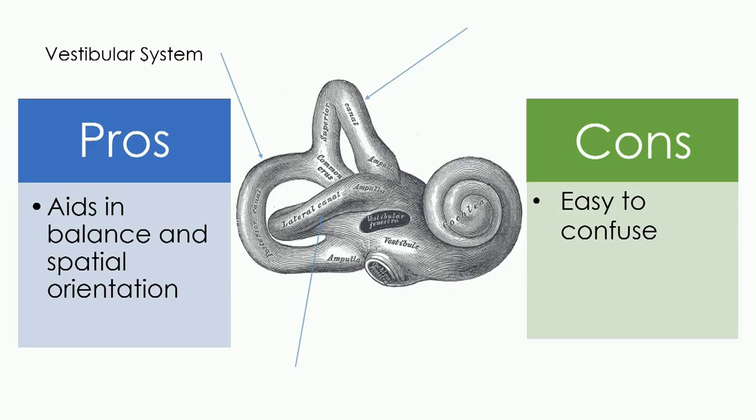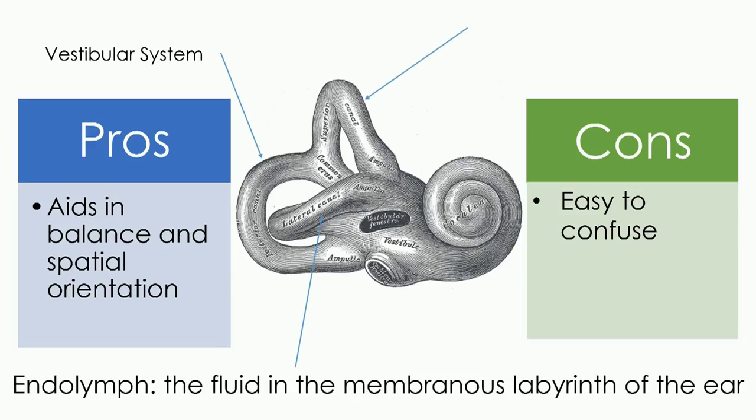The vestibular system has three semicircular canals in it that all contain fluid, called endolymph. On top of this fluid, the inner ear also contains hair-like sensory nerves.